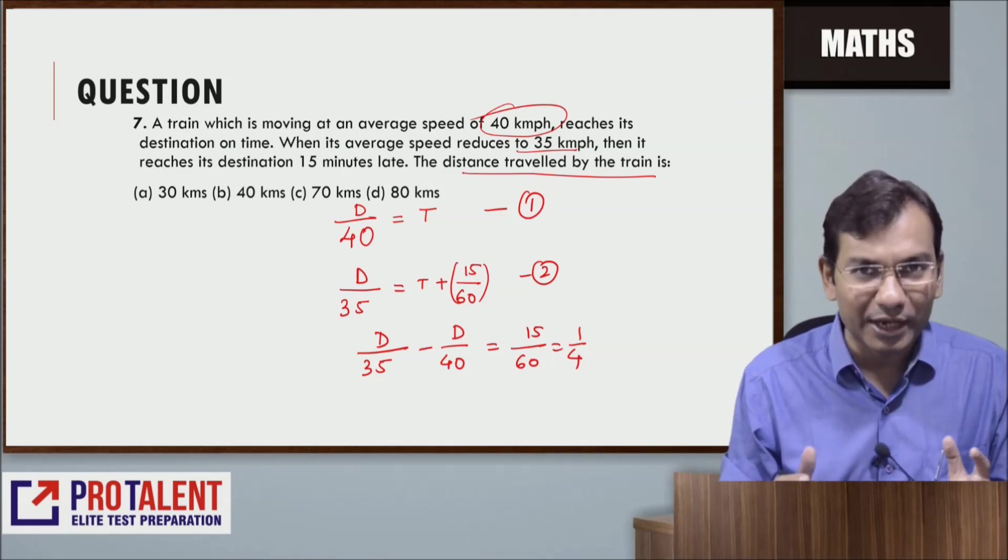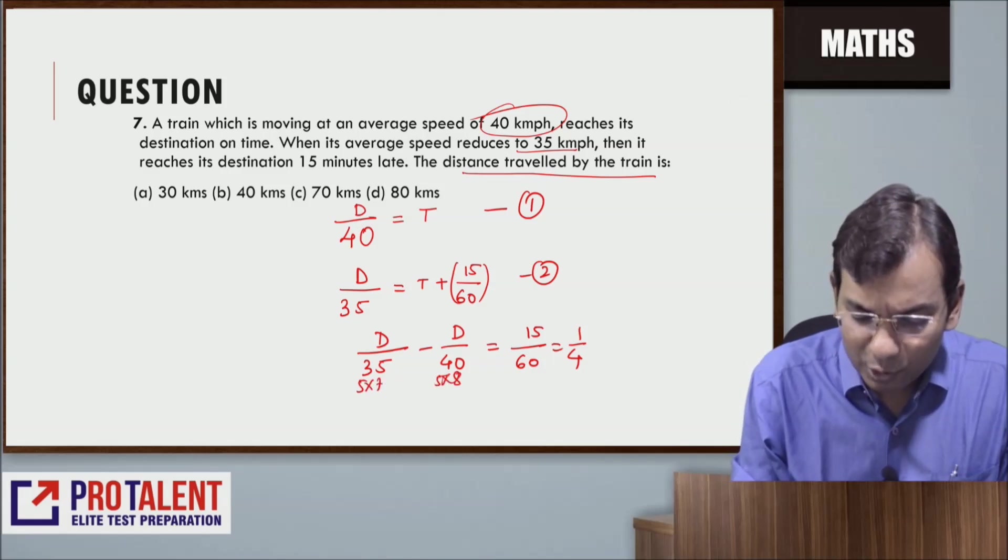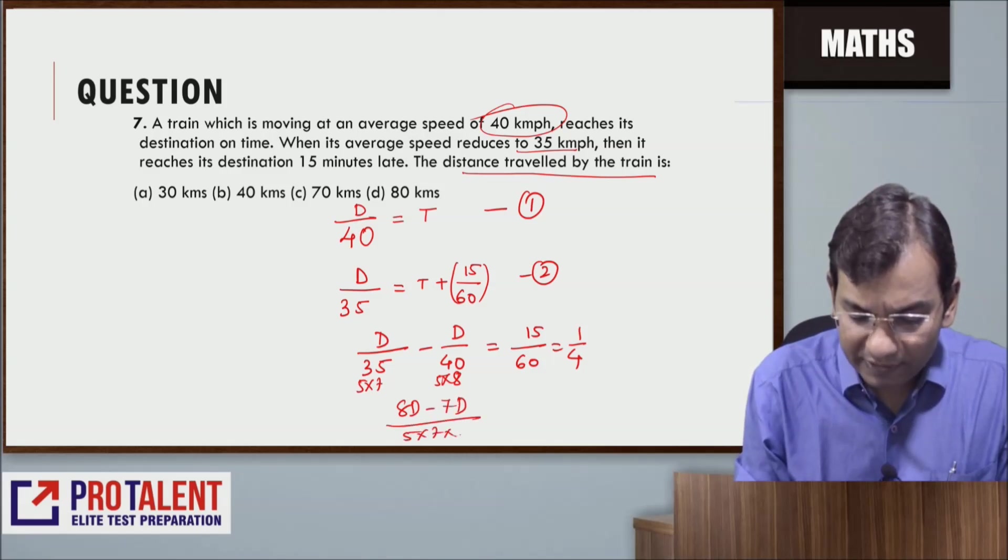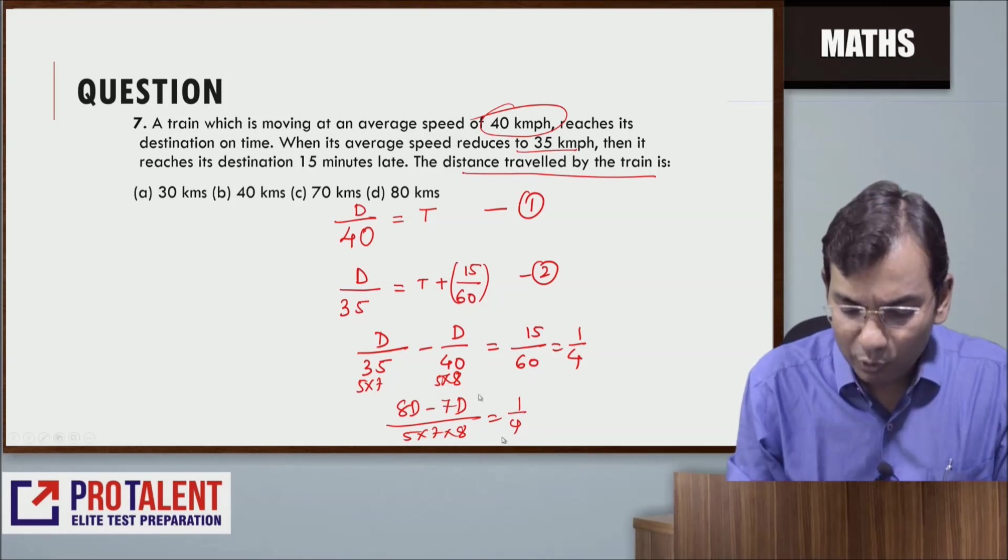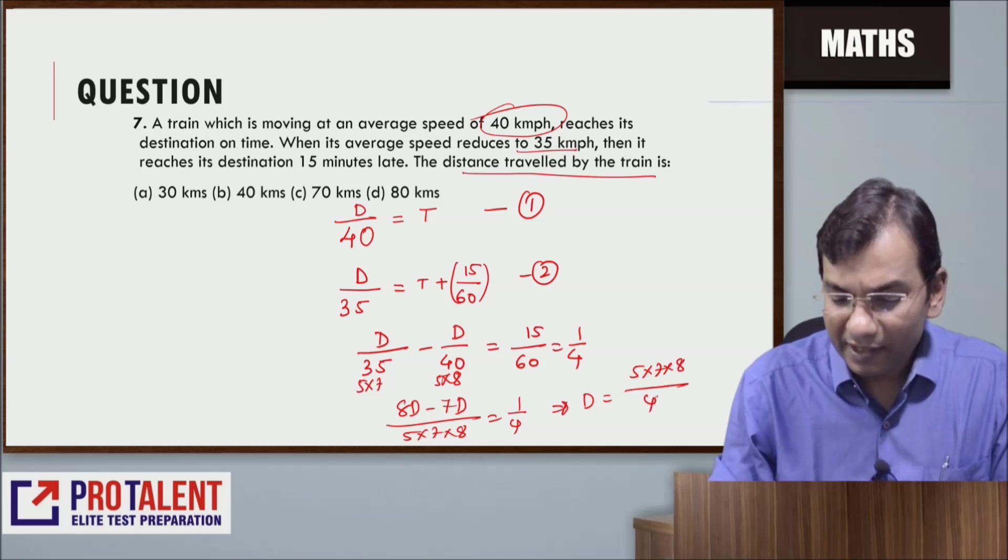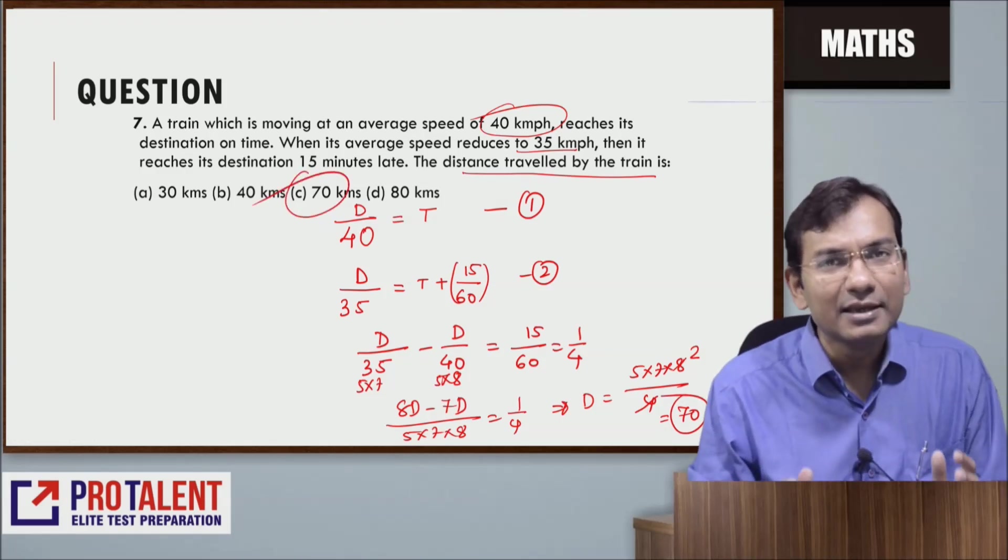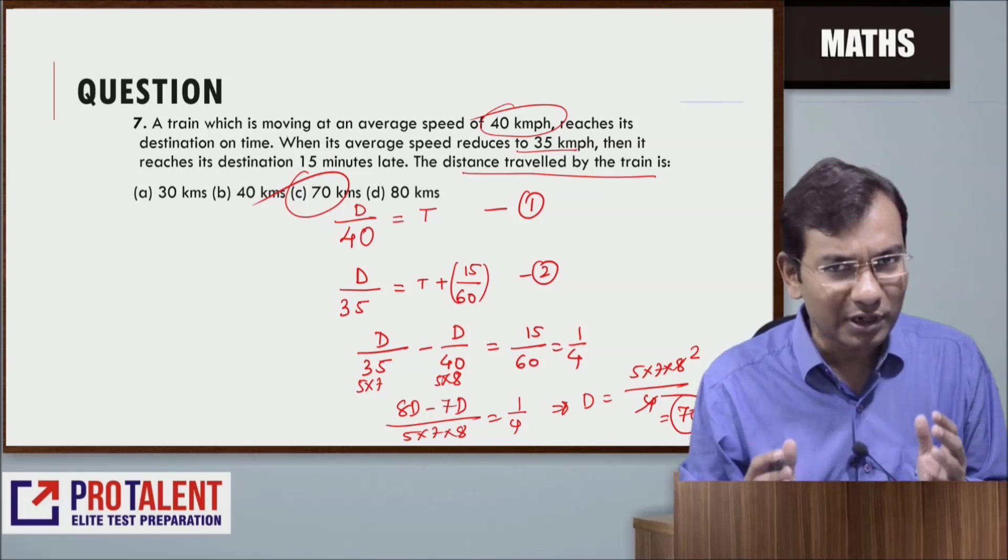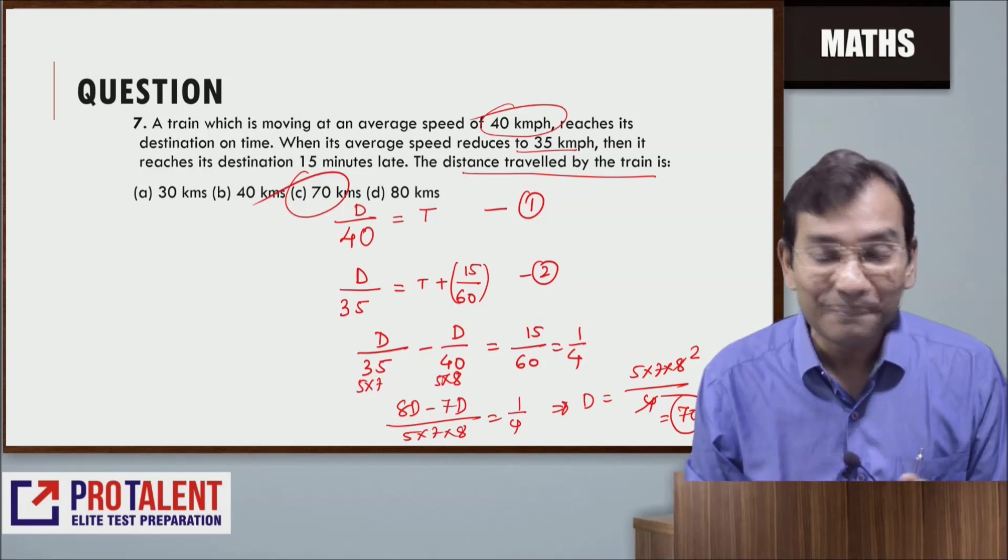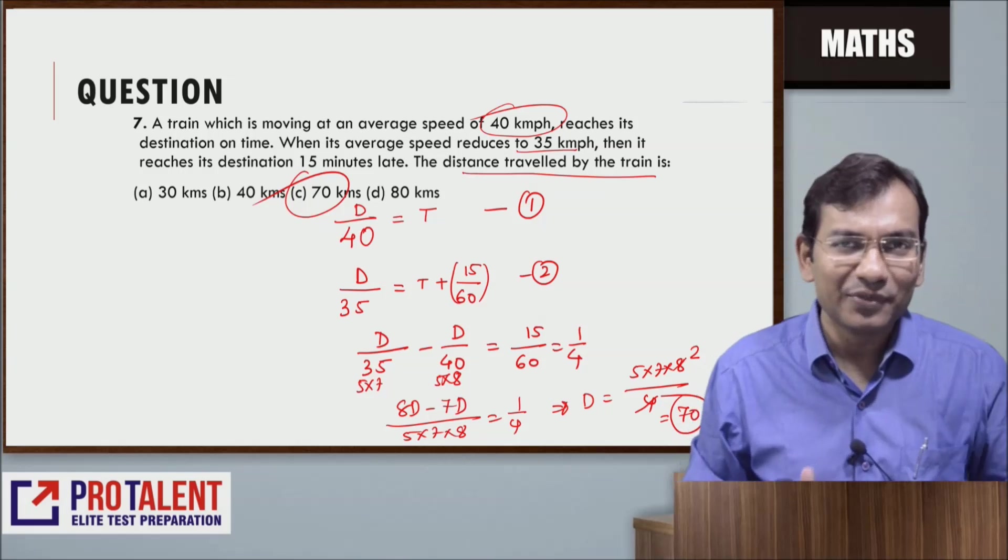So equation two minus equation one gives D/35 - D/40 = 1/4. Taking LCM: (8D - 7D)/(5 × 7 × 8) = 1/4. Therefore D = (5 × 7 × 8)/4 = 70 kilometers. That's very easy, and all of you should be able to do this easily. When I give you practice questions, make sure you do them in a specific time frame.